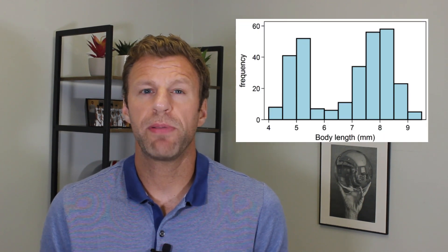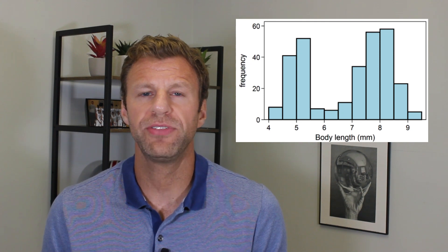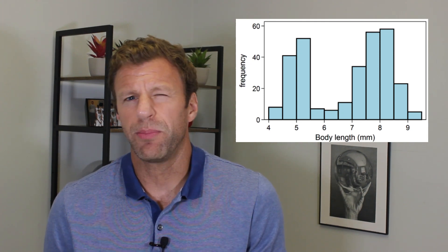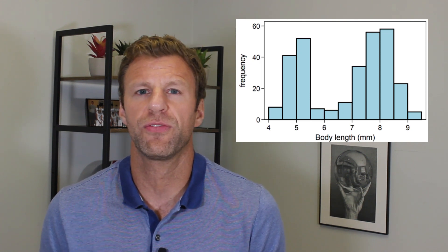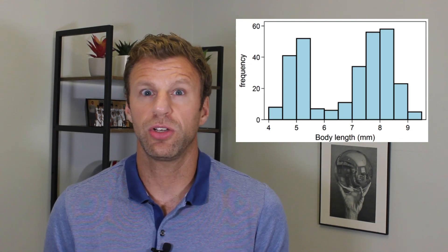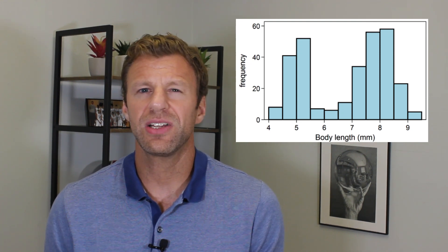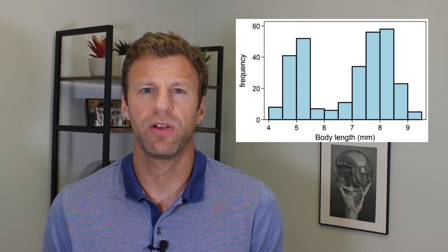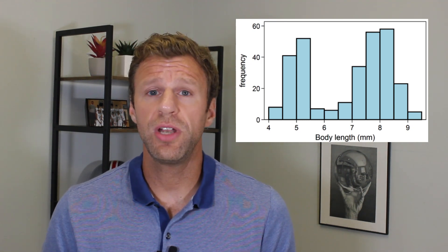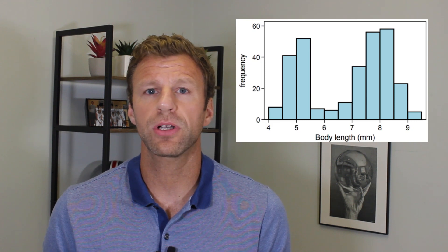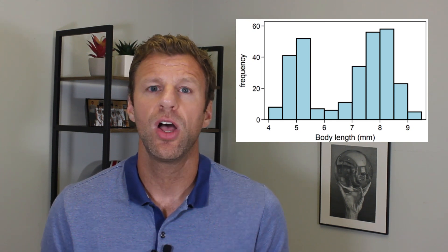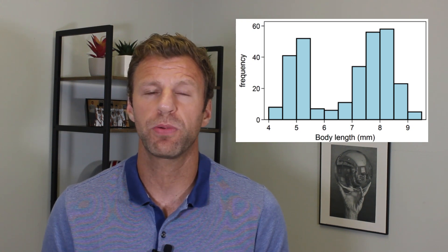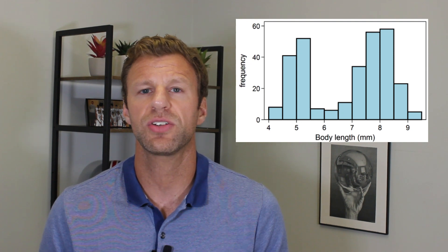In this final example, we're looking at a histogram of the body lengths of a sample of insects. When talking about the shape here, we definitely see something we call bimodal — two peaks, one on the left and one on the right. You can also say it's somewhat symmetric, but the big characteristic is bimodal. When it comes to center, it'd be easy to say 6.5, but that isn't really a good center because very little data is actually around 6.5. You might want to say there are two different centers — one at the lower cluster of five and one at the upper cluster of eight. The overall spread looks pretty large, but we see two clusters: one at the lower values and one at the higher values.